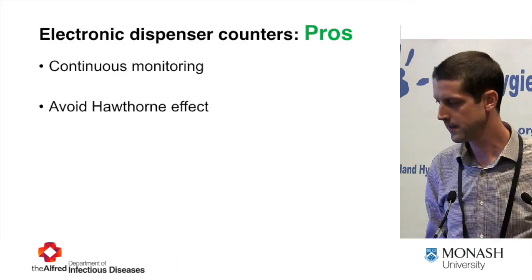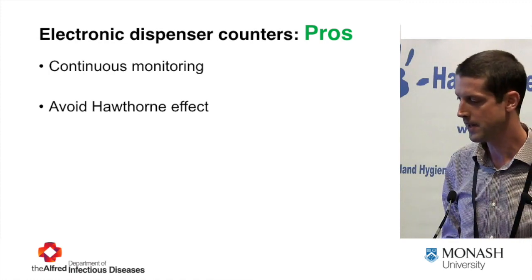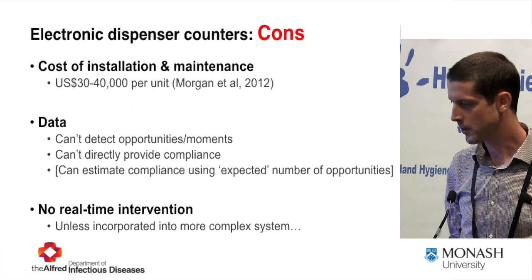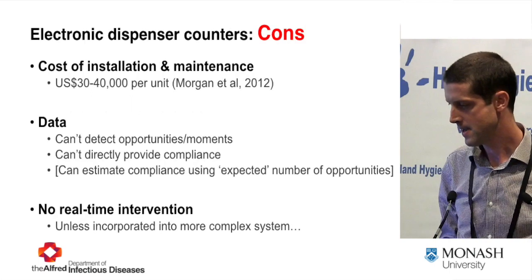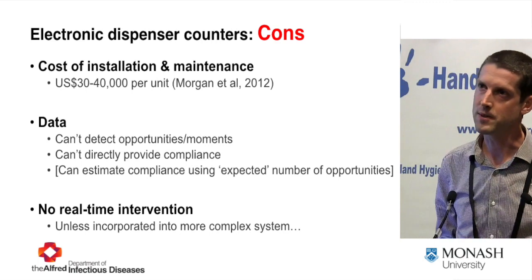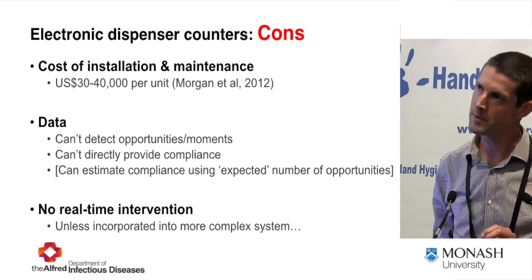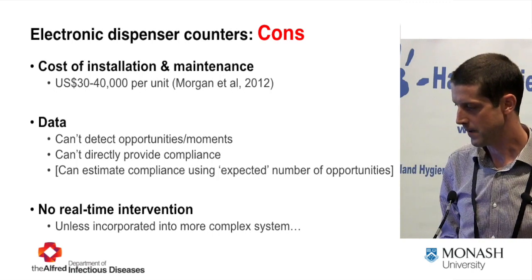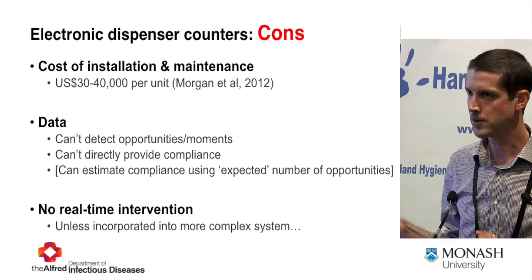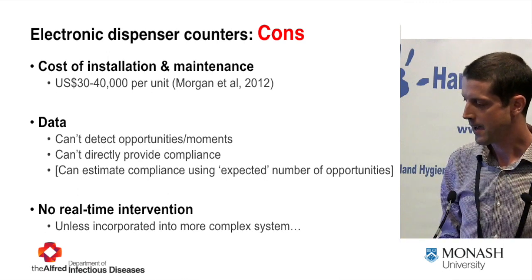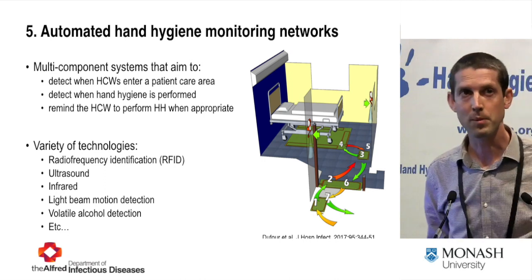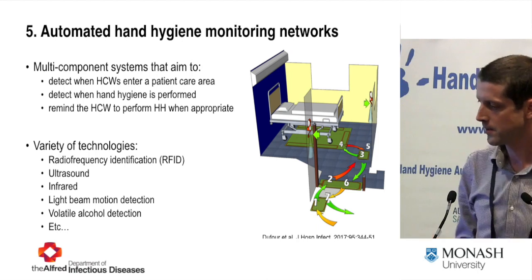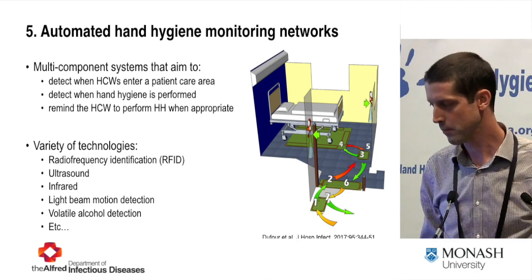Some pros of this approach: continuous monitoring, potentially avoiding the Hawthorne effect. Some cons: the costs, and the fact that you don't have a measure of the denominator — you can extrapolate and make assumptions, but it's a proxy. And most of the time there's not a real-time intervention unless you incorporate it into a more complex system, which brings us to the last approach: automated hand hygiene monitoring networks.